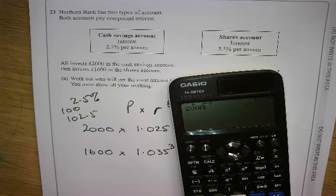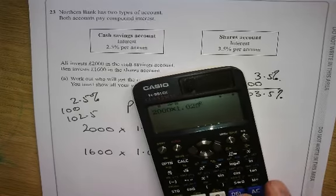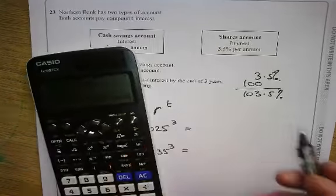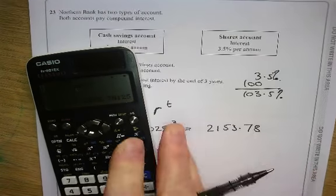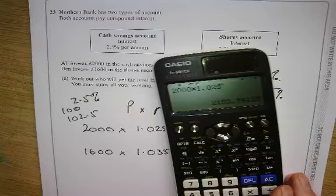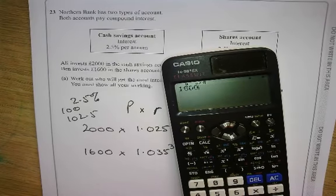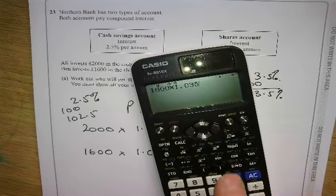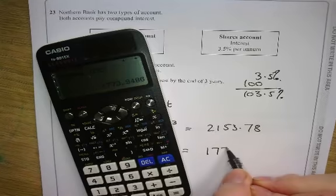So let's try that on our calculator now. 2000 times 1.025 to the power, see that button there, of three equals. 2153.78. Now, let's see Ben's. 1600 times 1.035 to the power of three equals.